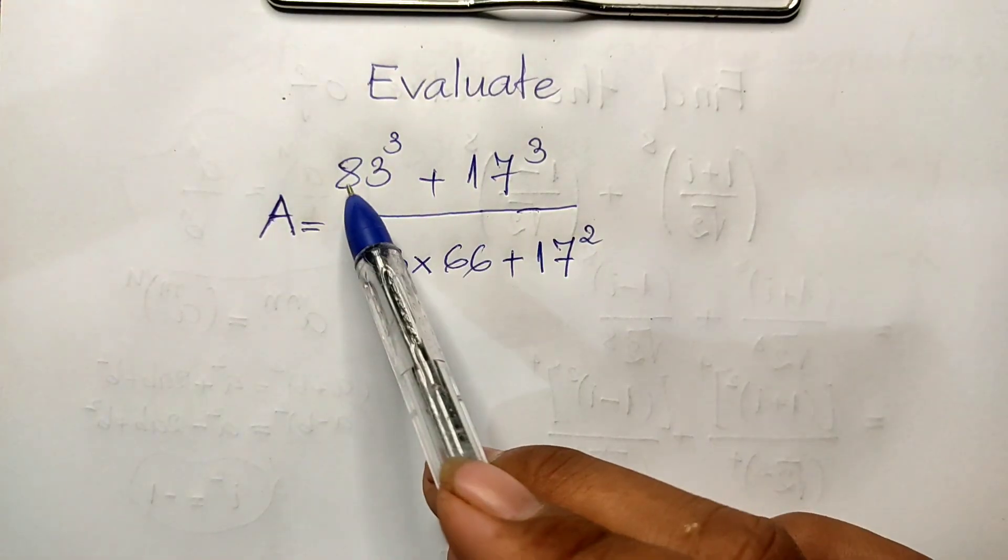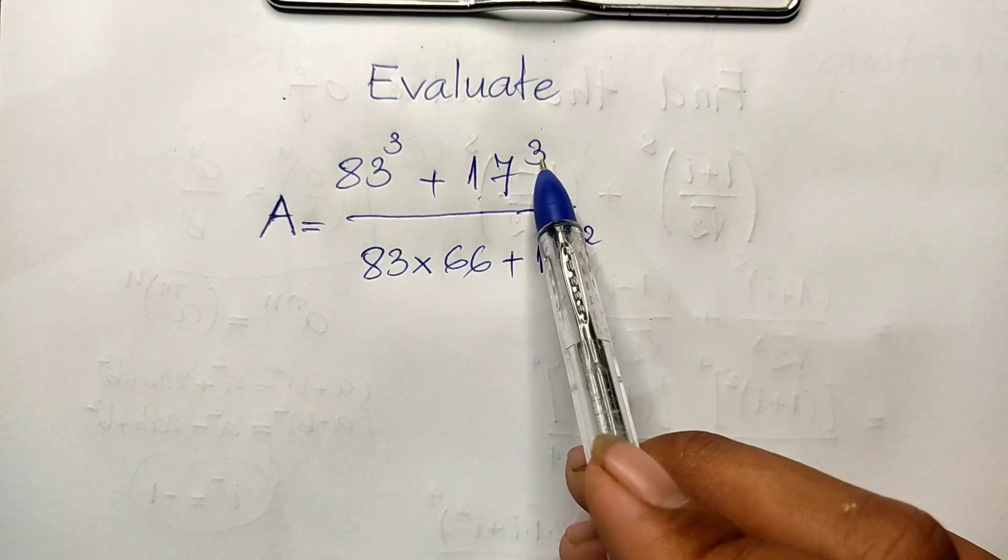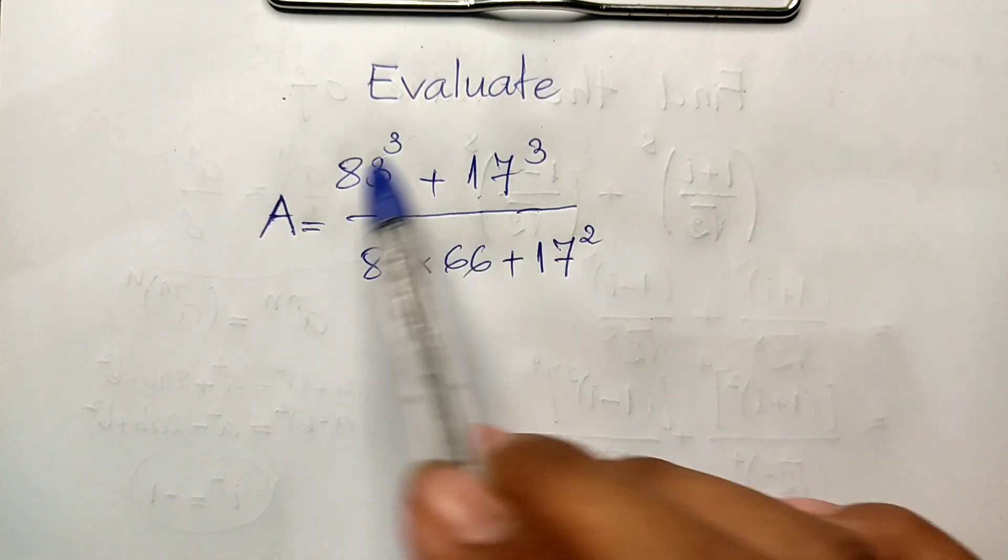You see this 83 to the power of 3 and this 17 to the power of 3, so they will use the identity.